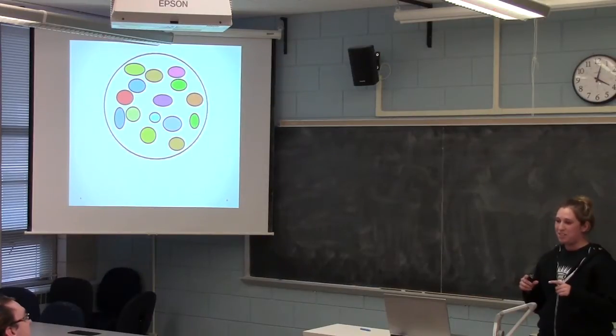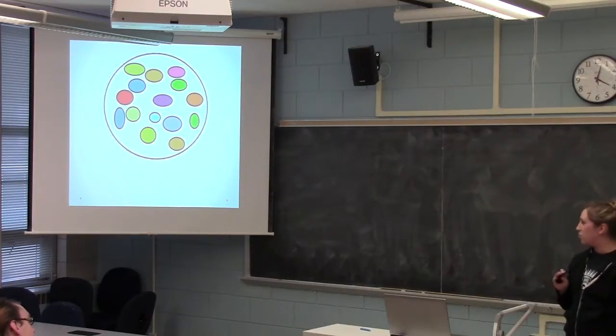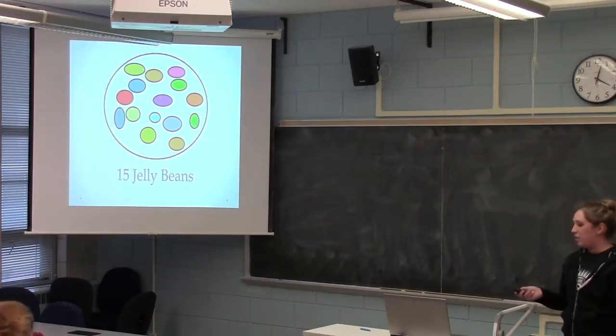Obviously, the jelly beans would be close together, but this is my makeshift picture. So if you count the total number of jelly beans just on the bottom of the jar, we get a total of 15 jelly beans.